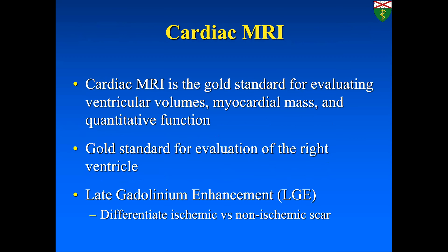Cardiac MRI is the gold standard for evaluating ventricular volumes, myocardial mass, quantitative function, and right ventricular assessment. The most important feature in cardiomyopathy is MRI's great tissue characterization — we have T1 and T2 signal, but late gadolinium enhancement (LGE) plays a fundamental role. The first thing you can do is differentiate ischemic versus non-ischemic causes of cardiomyopathy.